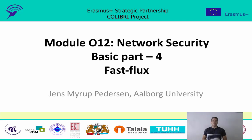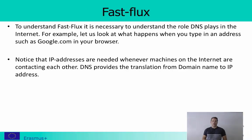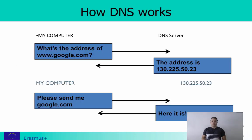Hello everyone and welcome to part 4 of the basic module in network security. Here I will give a short introduction to fast flux, but first I will explain how DNS works, since it's an important concept to understand. When machines communicate over the internet, they really use IP addresses. When you type a domain name like google.com in a browser, you need to know the corresponding IP address, and for this we have the DNS system.